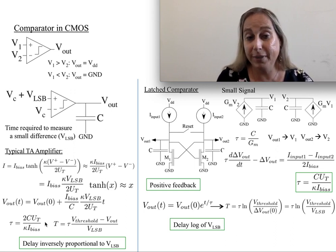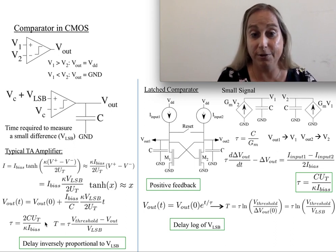You always want to try to minimize, get the highest time constant for the amount of bias current you're using. In other words, go as fast as you can for the energy you're going to use.